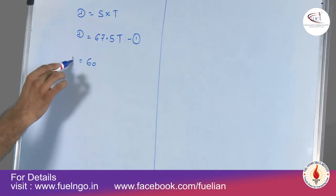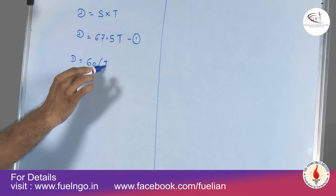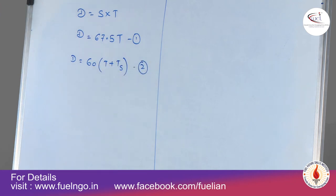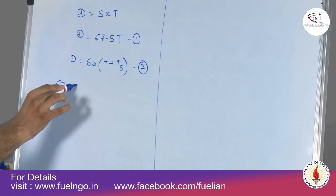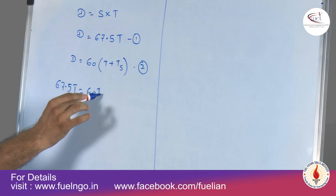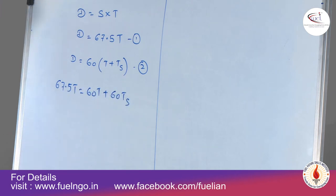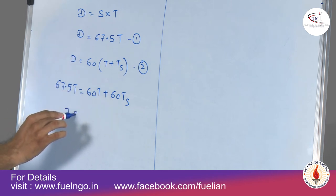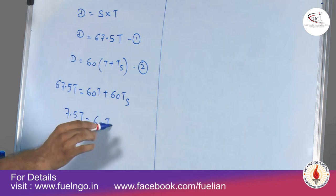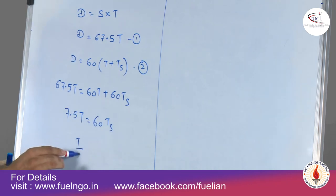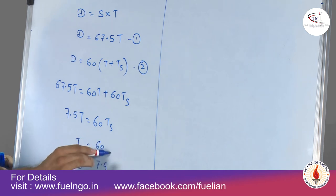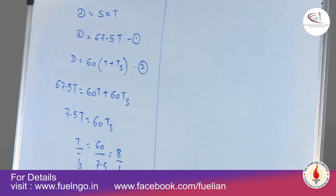Since speed has reduced, the time has increased — it is no longer just traveling time but traveling plus stoppage time. Equating the two: 67.5 × T = 60 × (T + Ts). So 67.5T − 60T = 60Ts, giving us 7.5T = 60Ts. The ratio T to Ts equals 60 divided by 7.5, which simplifies to 8 to 1.